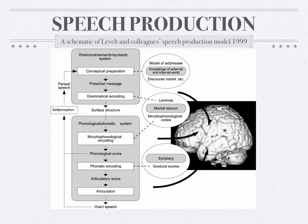After a set of morphemes has been activated and organized into a sequence, the speech sounds — or phonemes — that are required can be activated and placed in a sequence. Phonological encoding involves the activation of a metrical structure and syllabification, and that is why the syllabary is so important.